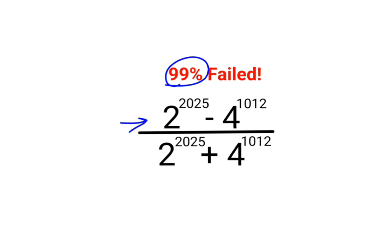We have 2 raised to 2025, then subtracting 4 raised to 1012, divided by 2 raised to 2025, adding 4 raised to 1012.